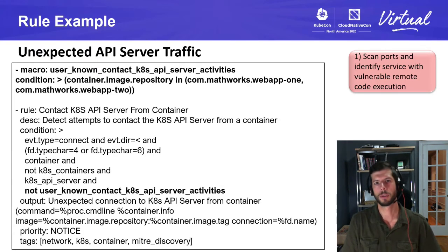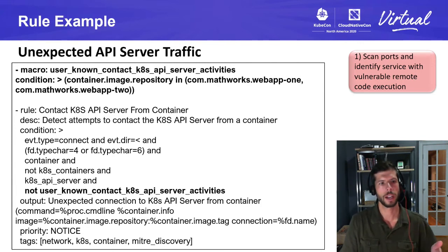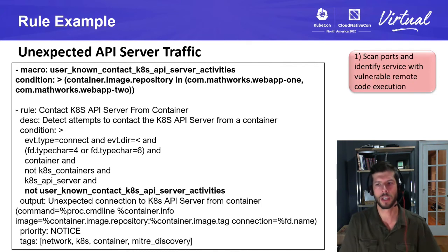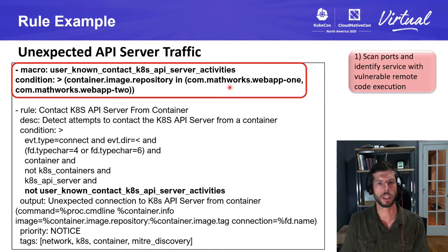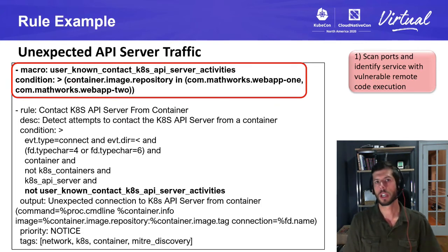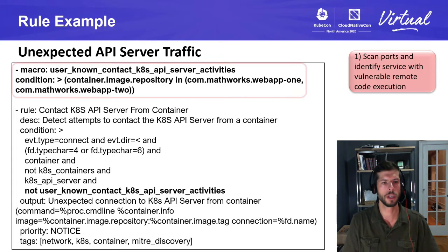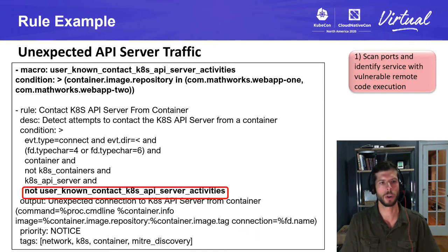Here's another reconnaissance example: a rule for unexpected API server traffic. The API server is a critical component of Kubernetes. From our system analysis, we identified and whitelisted all our applications — in this case web-app-one and web-app-two — which are allowed to communicate to the API server. So we have this rule: if anything else attempts to connect, we get alerted. This specifically flags anything not in our known contact list of accepted applications.